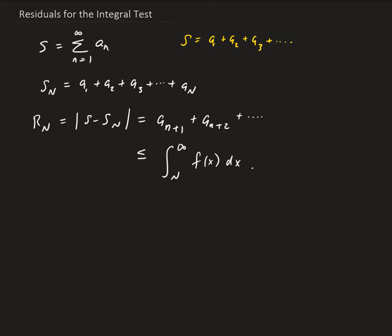So in general, the residual is equal to the difference between the actual sum of that series and the first n partial sums, and this is bounded by the improper integral of the function. We can use this idea to come up with a way to bound a series.